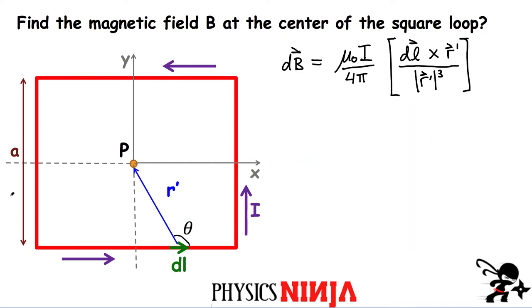Let's first look at the square loop here. I have a length that is A, which means that this distance here has to be A over 2, and that's going to be important later on when I analyze this segment of wire.